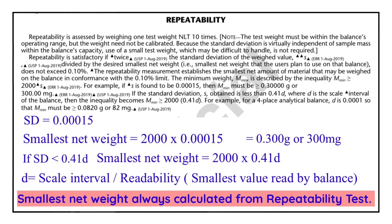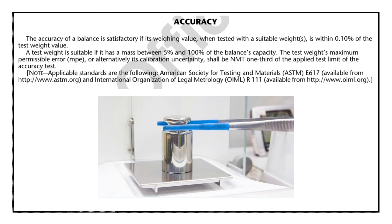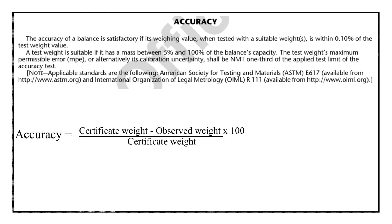Now comes the second test parameter mentioned in USP Journal Chapter number 41, and that is accuracy. To perform the accuracy test, a single test weight is selected and its weight is measured. Accuracy is then calculated with the formula: (certificate weight − observed weight) ÷ certificate weight × 100. The obtained value should not be more than ±0.10 percent.